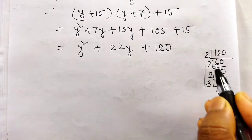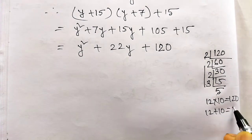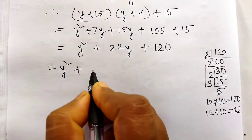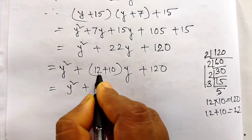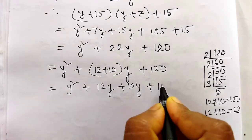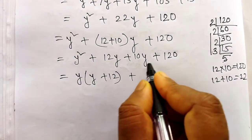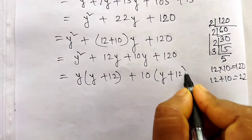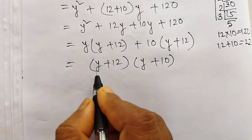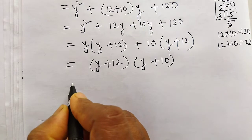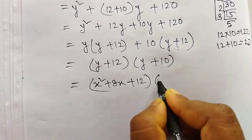দোগো ছোয় ছোয় - Now y squared plus y multiplied by 2 gives 12, y plus 10y plus 120. From these two, y is common. Taking y common: y plus 12 plus 8. From the two, 10 is common. Leaving y plus 12 equals 8. From the two expressions, y plus 12 is the common factor, plus 8.